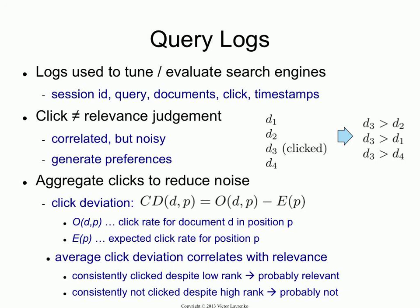So when computing your estimate of relevance for a document like the kitten, you have to factor out the effect of the position in which it was shown, and the way you do that is by subtracting the expected click rate for that given rank. What you get out of this is something similar to relevance — if a document was clicked often in a certain position, that suggests it was probably relevant. Some people are flawed and click on the kitten; some are honest and click on the algorithm. But once you average over thousands and millions of users, things wash out and you get numbers that correlate with relevance. The other way is to use these preferences directly, and that's what we'll do in the next lecture.